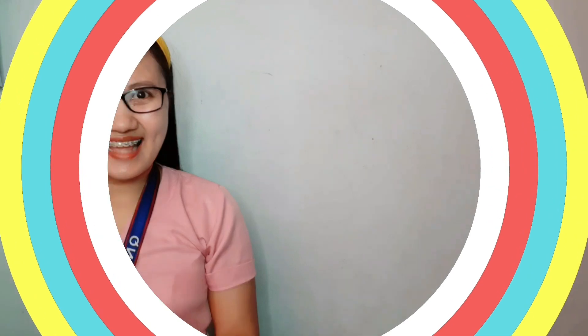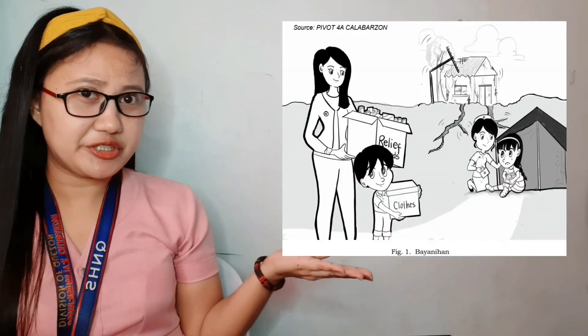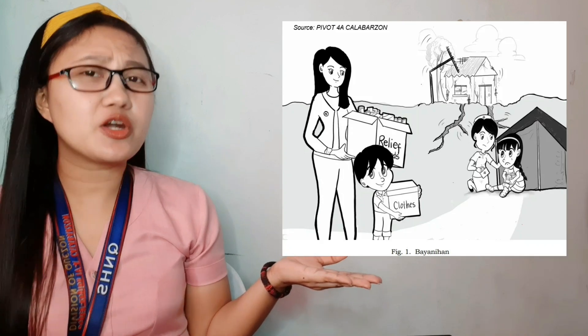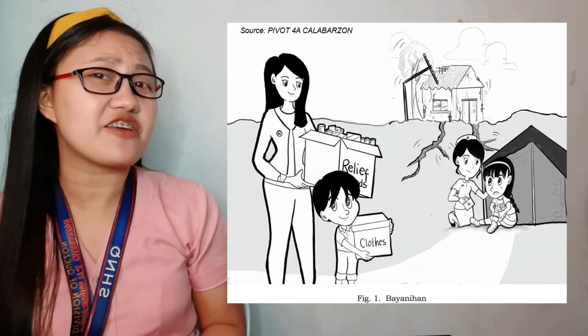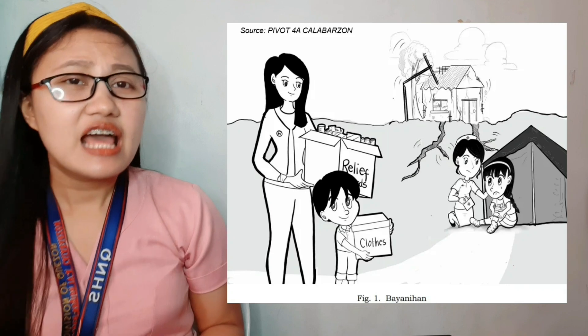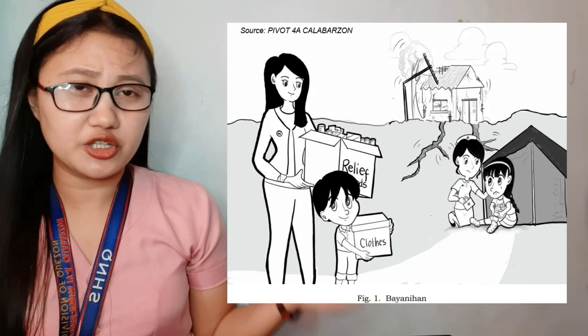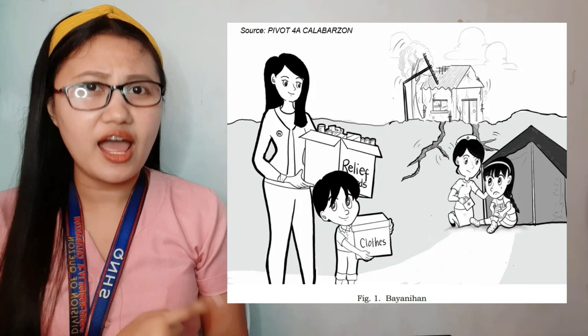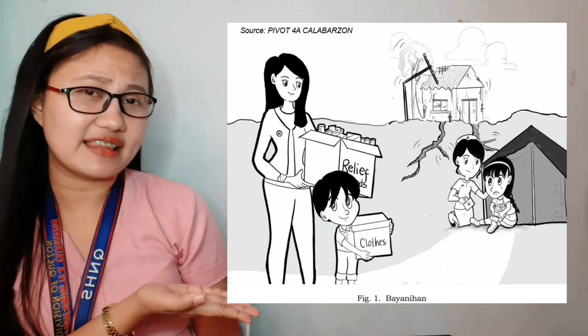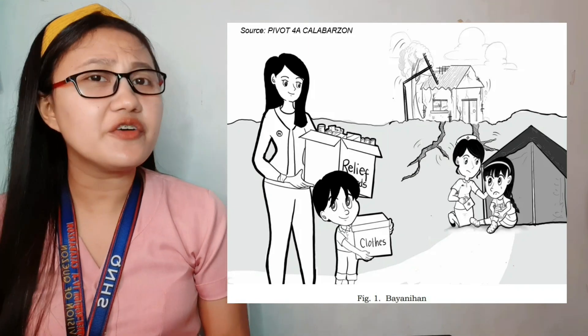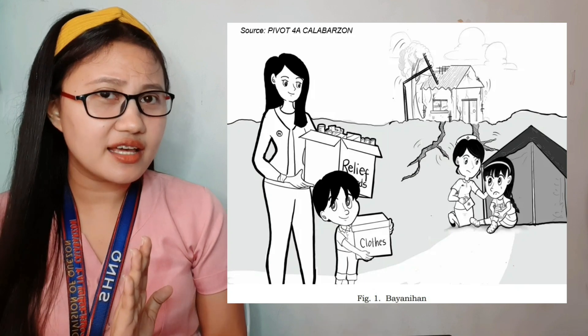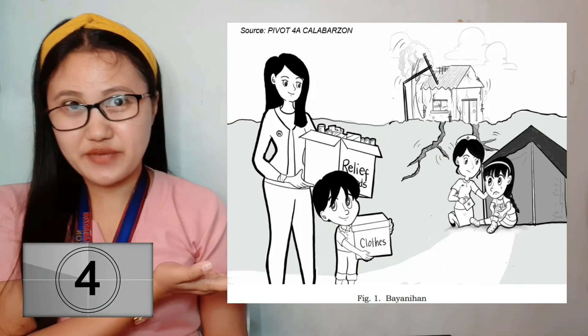But first, you have to determine the different components that you will be using in conducting scientific investigations. Before we start, let me show you this picture. If you are holding your module in Grade 7, Science 7 for Quarter 1, Week 1, this is the first picture that you can see in your module. Ano ba yung napapansin nyo dito sa picture na to? I will give you five seconds to think and to describe this picture.